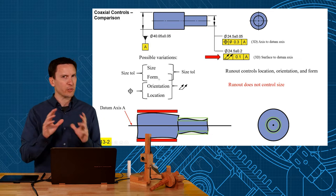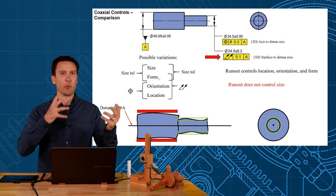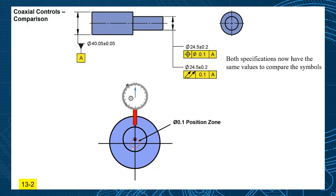So these are almost the same symbol, position versus run-out. Position does not control form, but run-out does control form. So I wanted to compare position and run-out again in a slightly different context here, this showing with perfect cylindrical features.